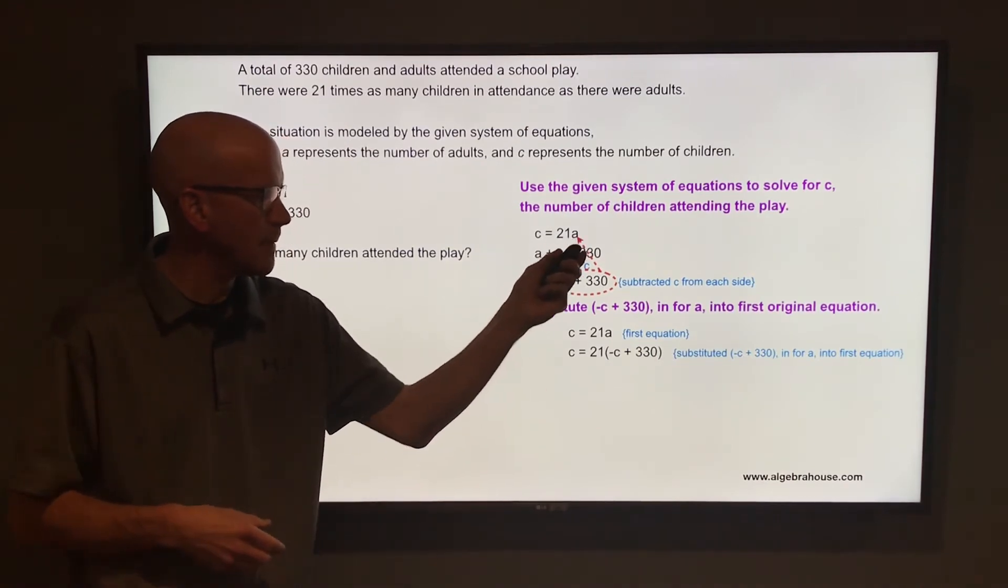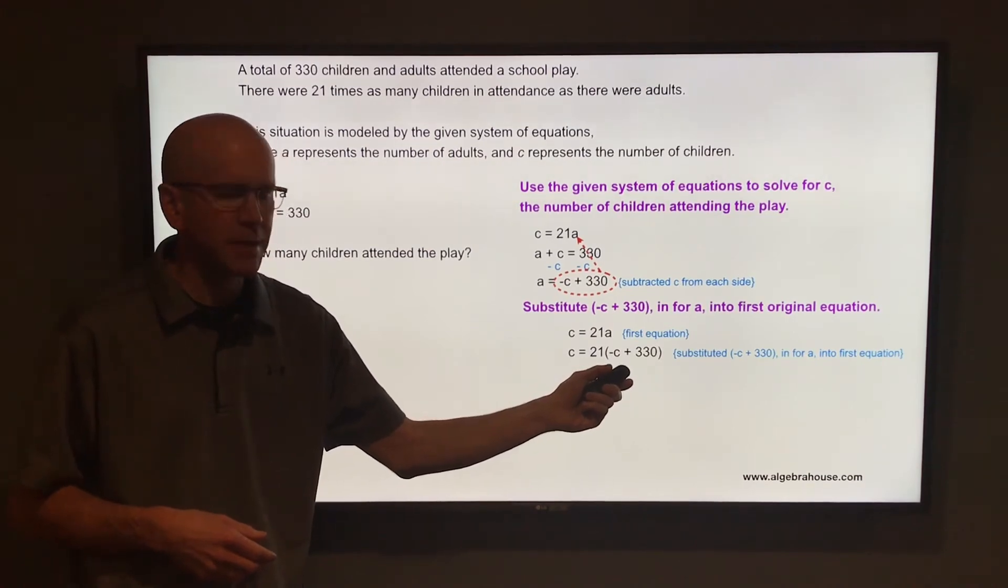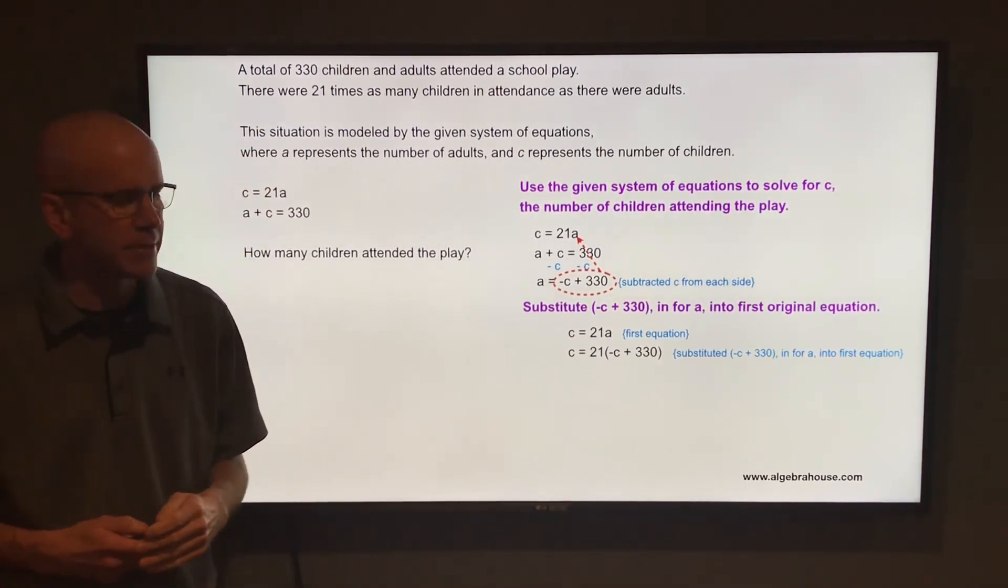So we're replacing the A with negative C plus 330. So you have C equals 21 times negative C plus 330. Use the distributive property with that 21.